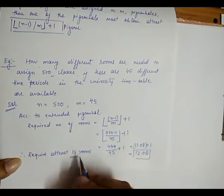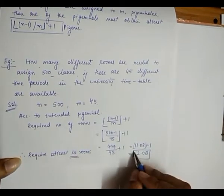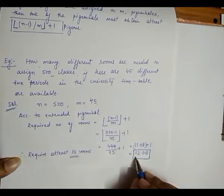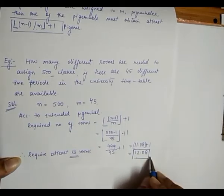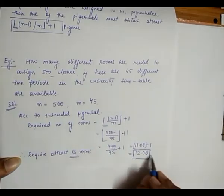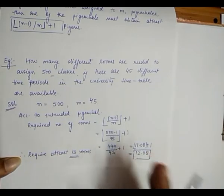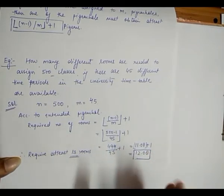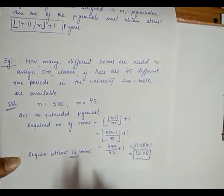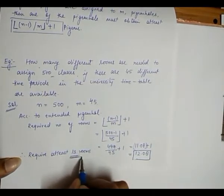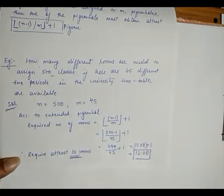We need 13 rooms because after applying the extended pigeonhole principle the value comes out to be 12.08, which means we require more than 12 rooms — therefore we require at least 13 rooms to assign these 500 classes. This is how we use the pigeonhole principle.